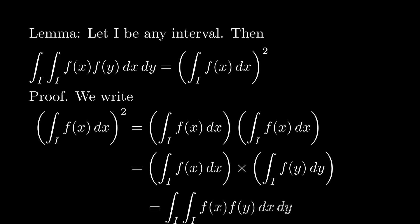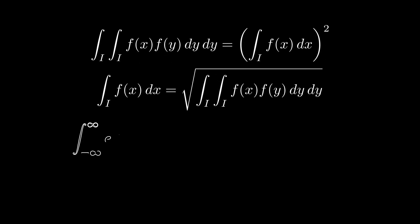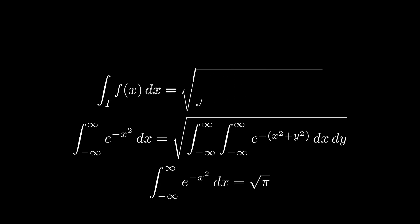Okay, so now we use the lemma, but in reverse. If the double integral is equal to the single integral squared, the single integral is the square root of the double integral. We've already done the double integral. That ends is equal to pi, so the single integral is equal to the square root of pi, and we're done.